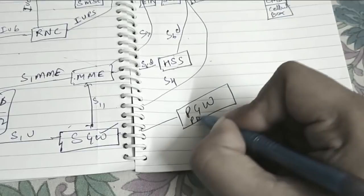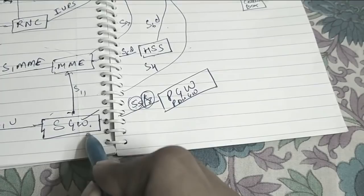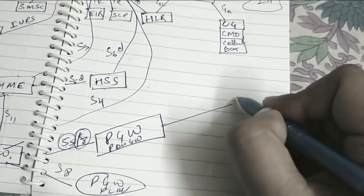You must be seeing that two interfaces are there. S5 is for the same PLMN. If this SGW is connected to different PGW of different PLMN, then the interface between this will be S8. Now this PGW will be connected to the ISP server or cloud by SGI interface.